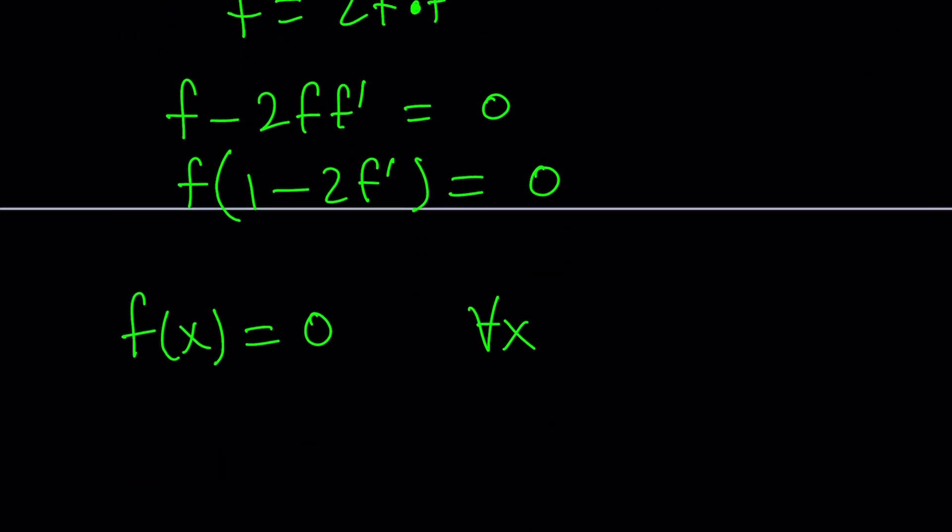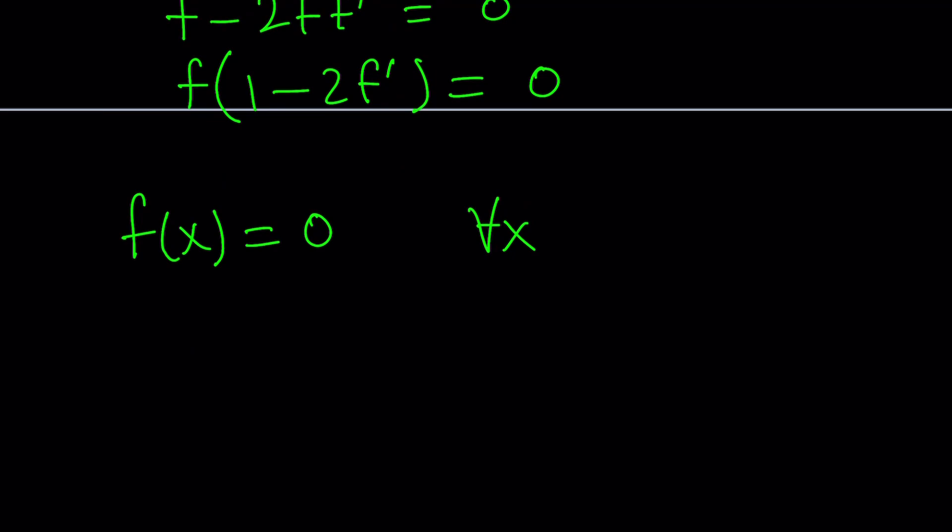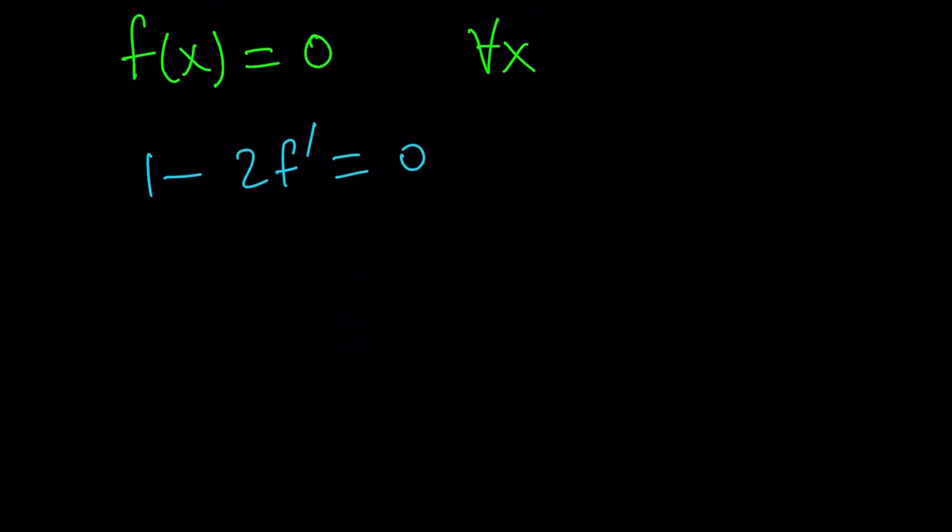What if f(x) is not equal to zero? Then you get the second factor. 1 minus 2f prime equals zero. That means f prime equals 1 half.